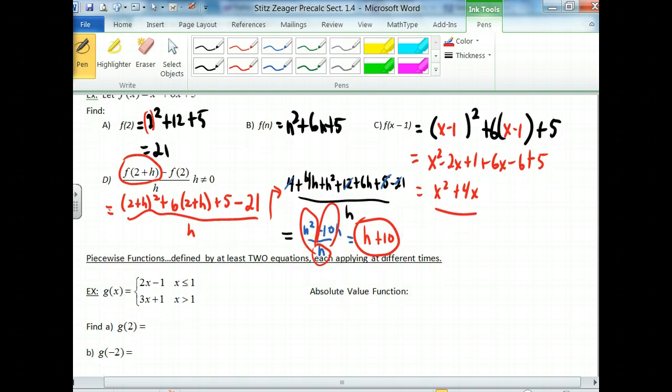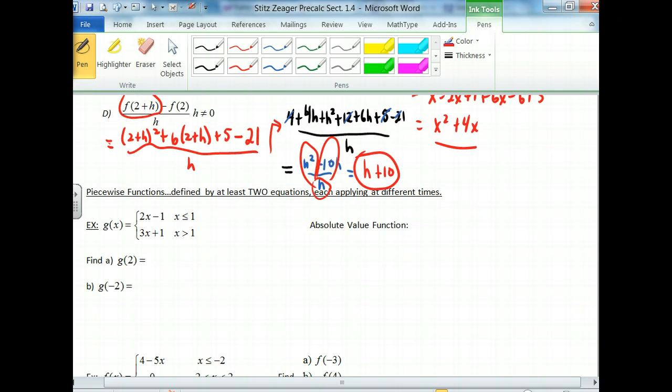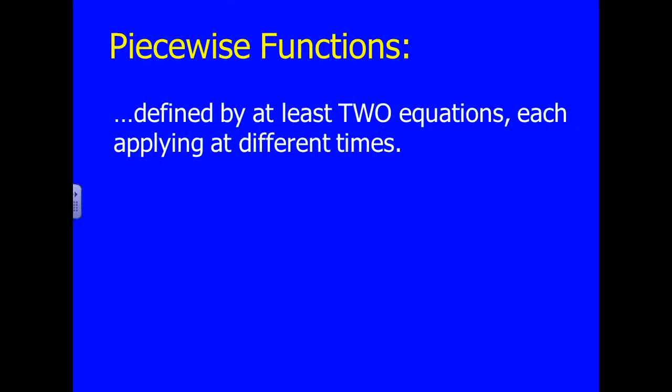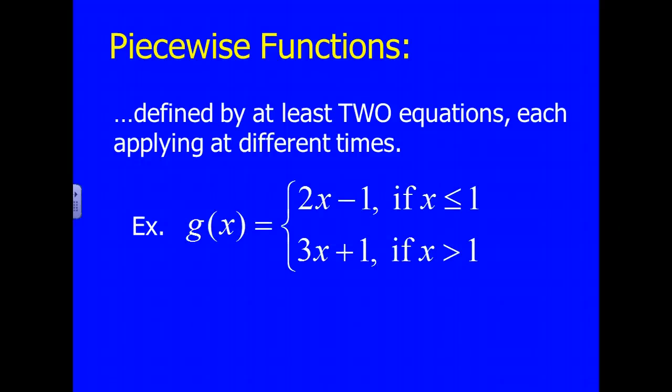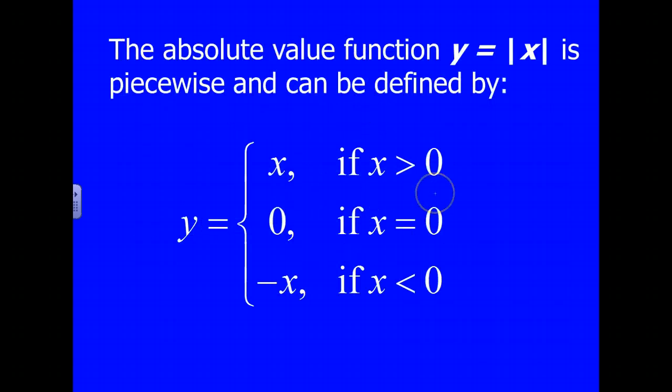Okay, here we go. Piecewise functions. Piecewise functions can be defined by at least two equations, each applied at different times. So if I take g of x, what happens here is that this tells me when this piece of the equation is going on, x is less than or equal to 1. Here, if x is greater than 1, I apply this function. So for instance, if I do g of 3, then I need to plug it in this one here. If I do g of negative 4, well, negative 4 is less than 1, so I plug it into this one here and evaluate it. So each piece is turned on depending upon the x value here.